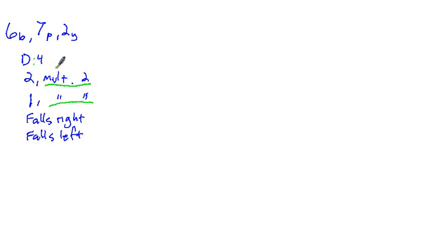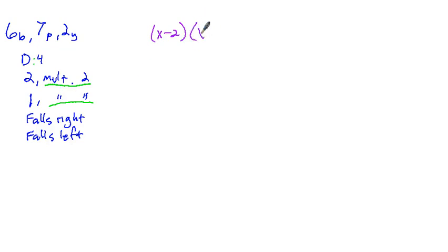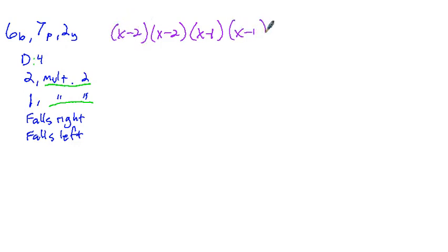We need to incorporate that into our polynomial. Let's see what would happen if we didn't. If 2 is a zero, then x minus 2 would be a factor. And if 1 is a zero, then x minus 1 is a factor. If you stopped there, you'd multiply to get a degree 2, not a degree 4. That's where the degree 4 comes from — two zeros of 2 and two zeros of 1 — so it must be x minus 2 squared times x minus 1 squared.